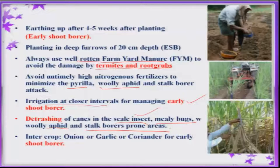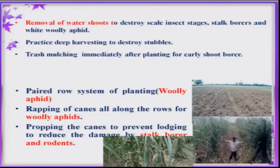Wherever possible, an intercropping system should be followed with crops like onion, garlic, and coriander, which keeps away some insect pests, especially shoot borers. Do not retain water shoots, as they attract all insects — both sucking insect pests and borers. One should periodically remove water shoots in the sugarcane ecosystem.